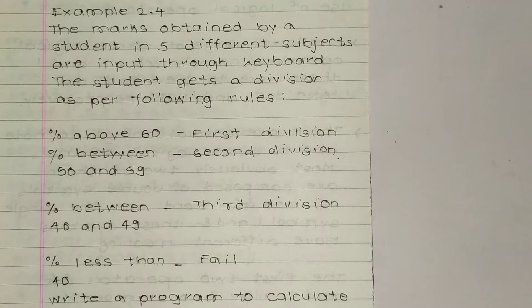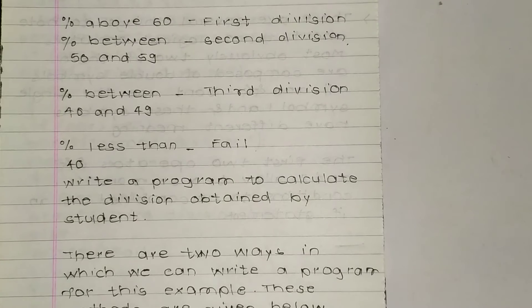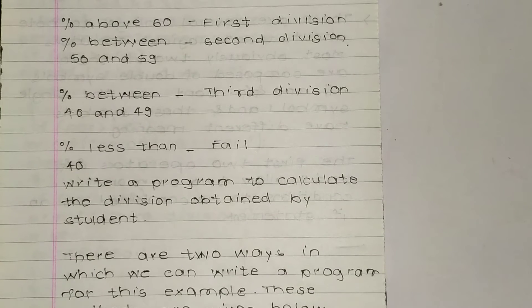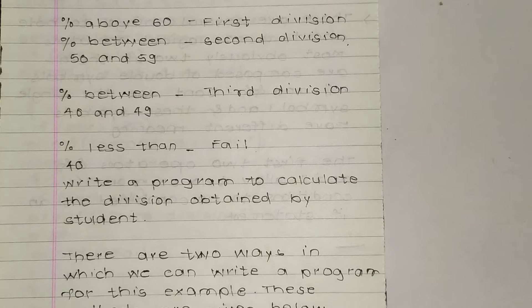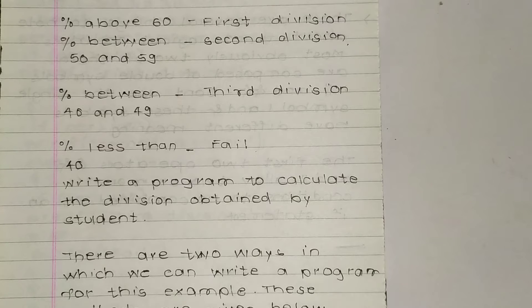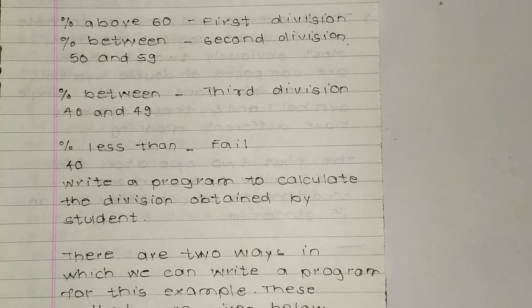These are the rules. First is percent above 60, this is first division. Percent between 50 and 59 is second division. Percent between 40 and 49 is third division. Percent less than 40 is fail. So these are divisions.